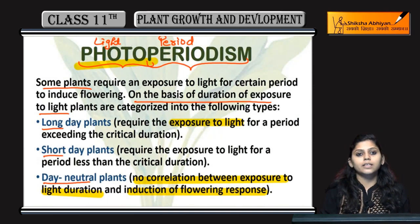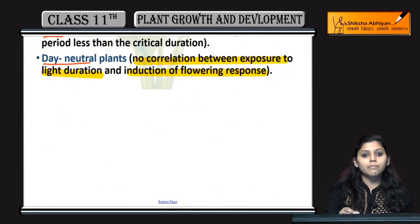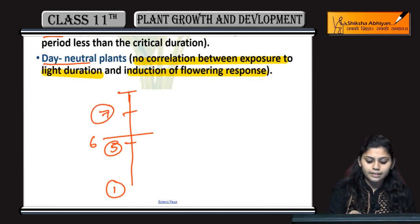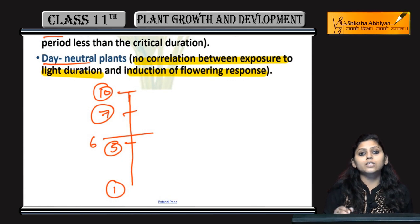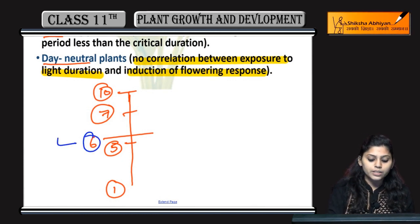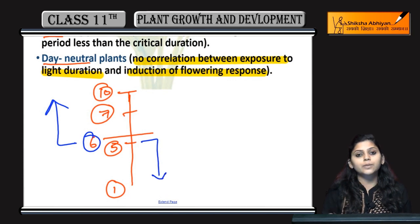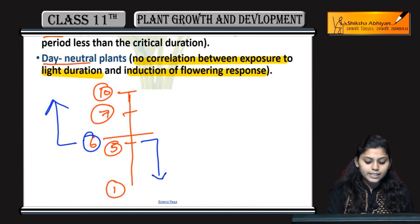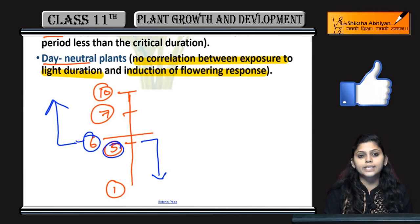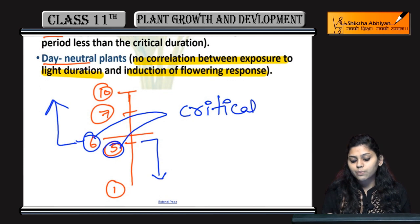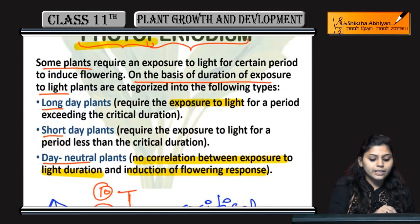अब जो long day plants हैं इन्हें ज़्यादा light period चाहिए, short day plants को कम light period चाहिए. मान लो यह है 1, 2, 5 hours, this is 6 hours, 7 and 10 hours. अगर long day plants को 6 hours से ज़्यादा light मिलनी चाहिए, और एक short day plant को 5 से कम light period का exposure चाहिए — तो यह 6 for long day plant और 5 for short day plant, इन्हें बोलते हैं critical period या critical duration. जिसके respect में हम बात करेंगे कि इससे ज़्यादा time period चाहिए या इससे कम — उसे कहेंगे critical duration.